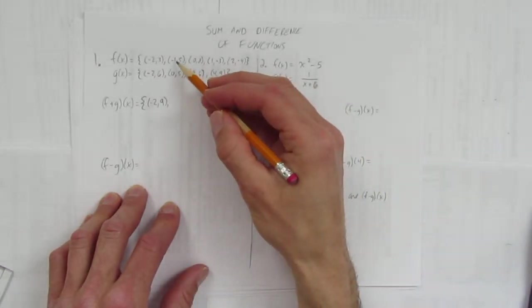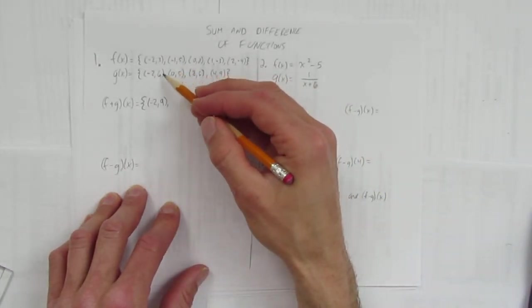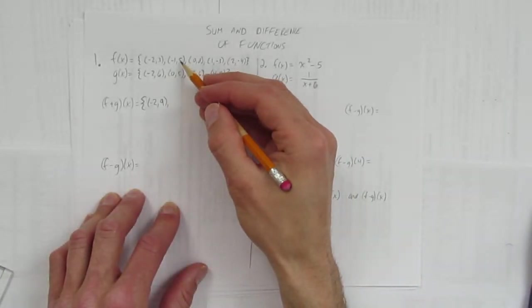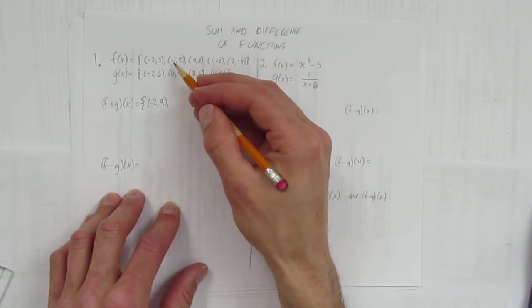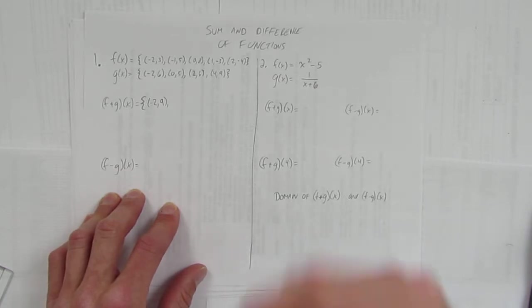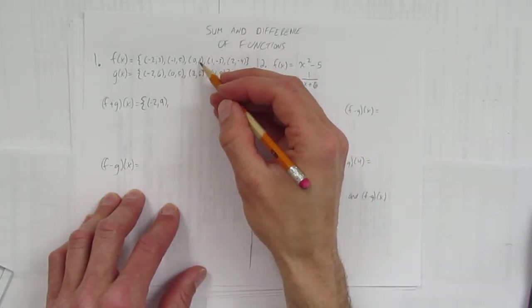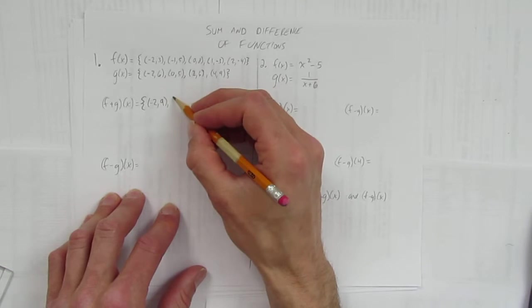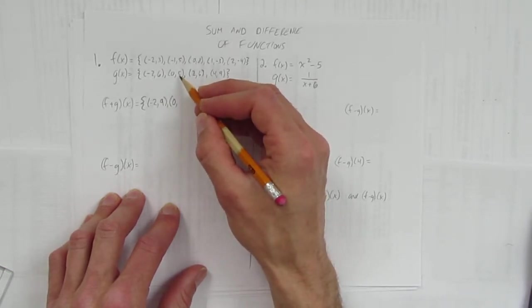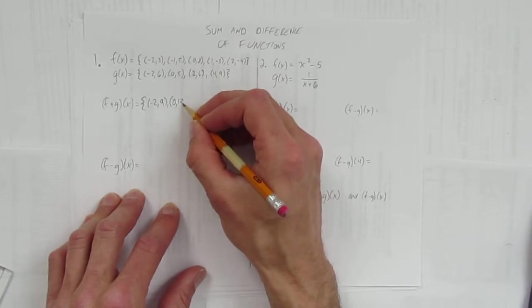My next x values here are negative 1 and 0. There's no negative 1 on g(x), which means there's no point at negative 1. You can't add a point for an x value of negative 1 to no other point with the same x value. It's undefined. We move on to the next point. We have 0, 8 and 0, 5, so they share a point at 0. Now we just add their y values. What's 5 plus 8? 13.